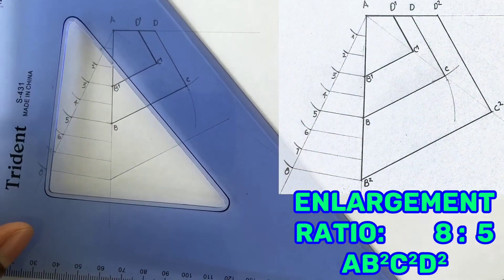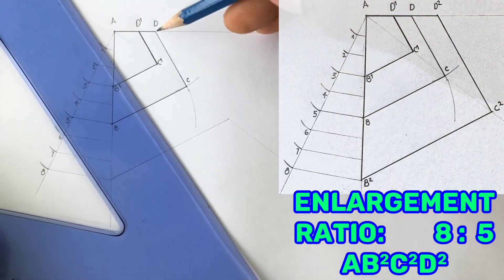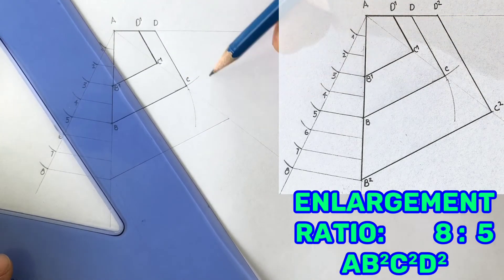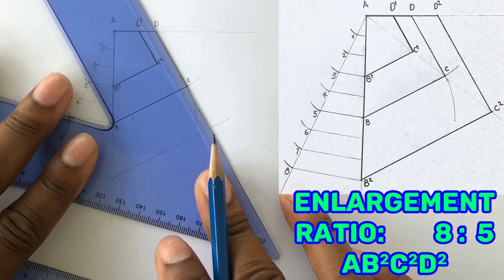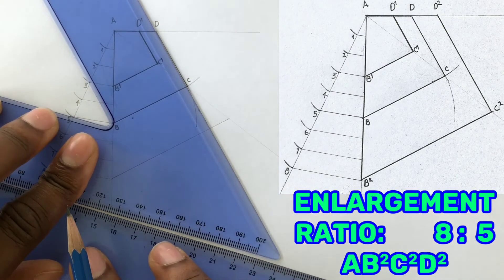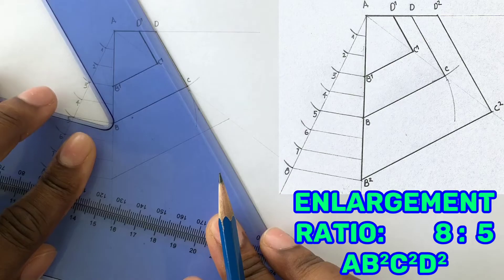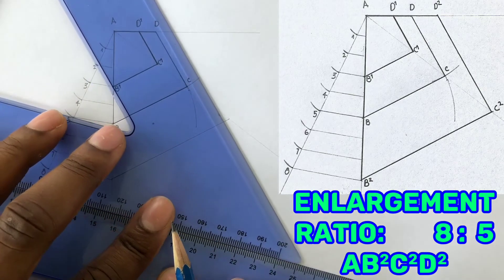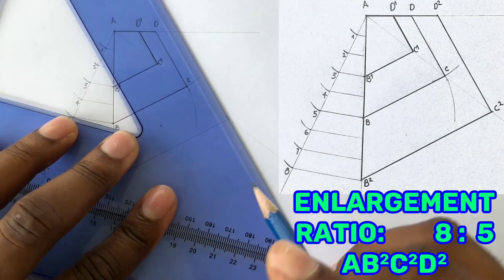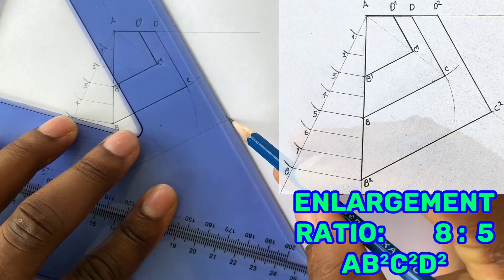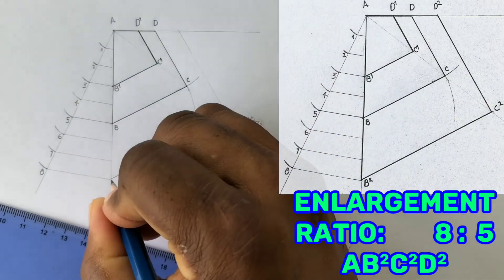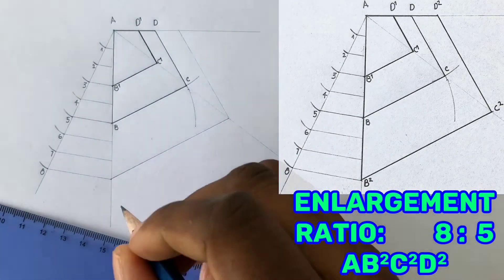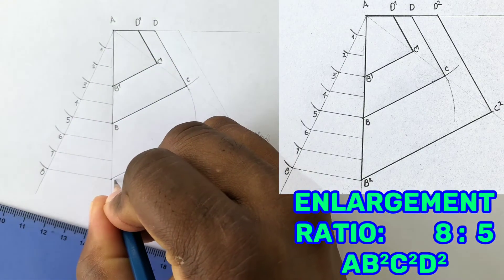You will now draw a line that is parallel to DC from the last intersection you got. Now using two set squares, draw a parallel line from the previous intersection you got to touch the line extended from point D. Label points B2, C2, and D2.